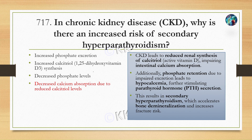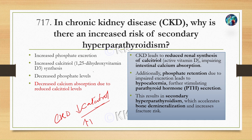In chronic kidney disease patients, renal synthesis of calcitriol is reduced, which impairs intestinal calcium absorption. Additionally, phosphate retention due to impaired excretion leads to hypocalcemia, which further stimulates parathyroid hormone secretion. This results in secondary hyperparathyroidism, which accelerates bone demineralization and increases the risk of fractures.